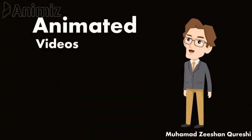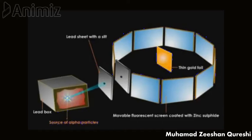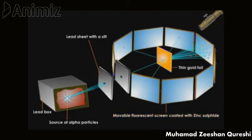And finally, the animated videos. In this video you can see a lead box, which is the source of alpha particles. The radiations pass from the lead box to a thin gold metal foil. The thin gold metal foil reflects the particles onto a screen coated with zinc sulphide, and the particles can be observed with the help of a microscope.